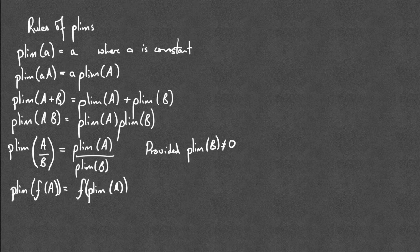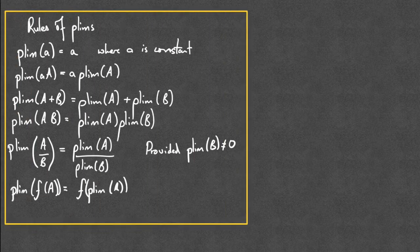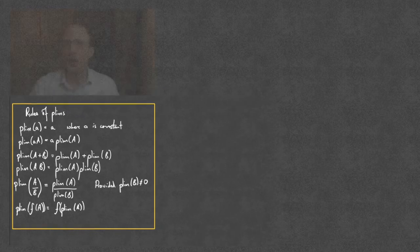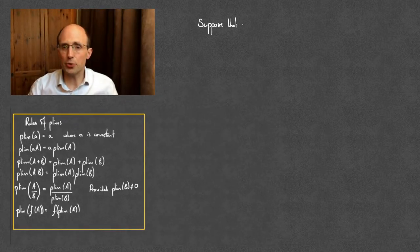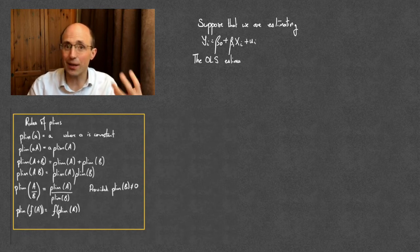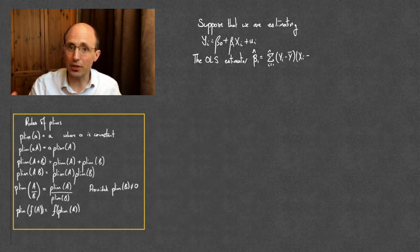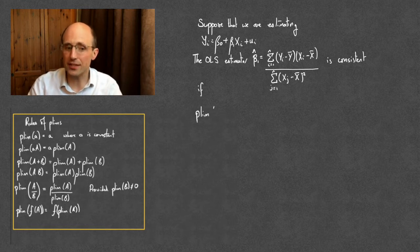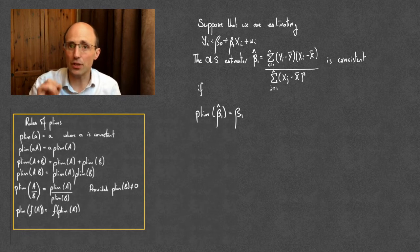Now we'll use these rules to investigate whether the OLS estimator is consistent — that is, is the probability limit of beta 1 hat equal to beta 1? Suppose we're estimating the relationship yi = beta 0 + beta 1 * xi + ui using OLS, and assuming that is how the data is generated. The OLS estimator beta 1 hat, equal to the sum of (yi − y-bar)(xi − x-bar) over the sum of (xi − x-bar) squared, provides an estimate of beta 1. It is consistent if the probability limit of beta 1 hat equals the true parameter beta 1.